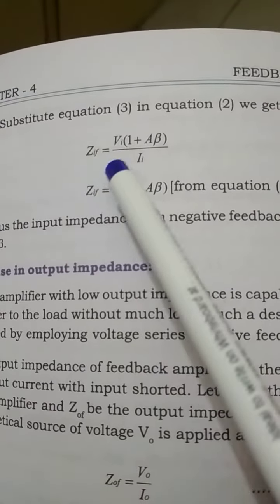So we got Zif equals Zi times (1 plus A*beta). The input impedance with feedback will increase by an amount of (1 plus A*beta).